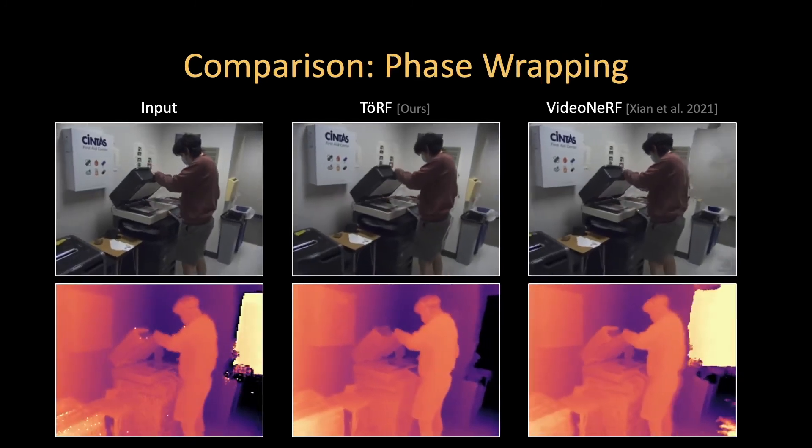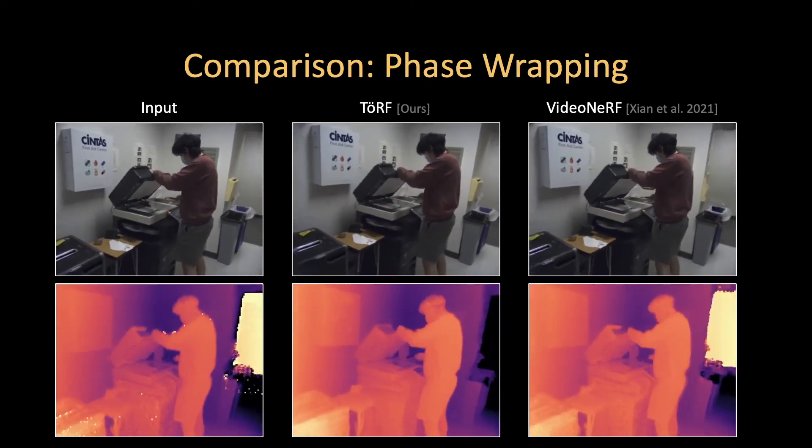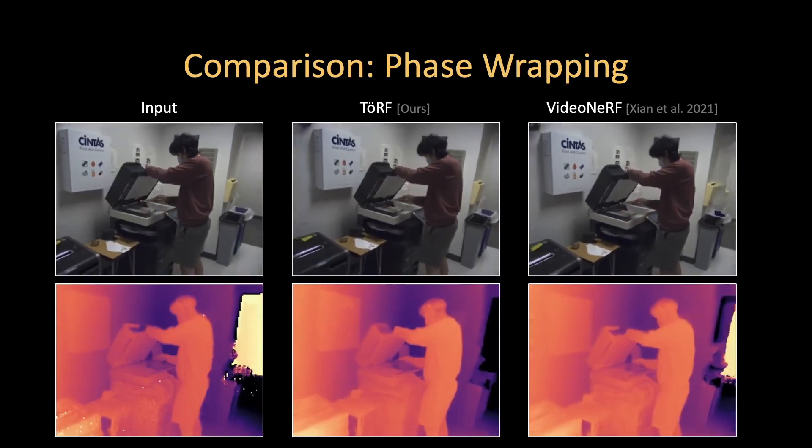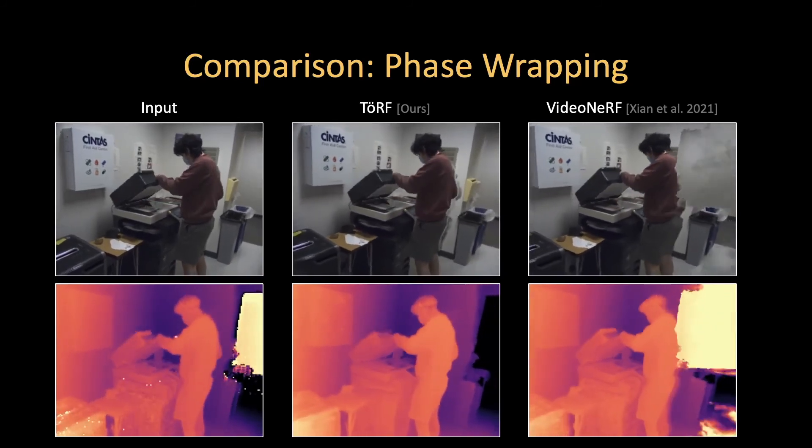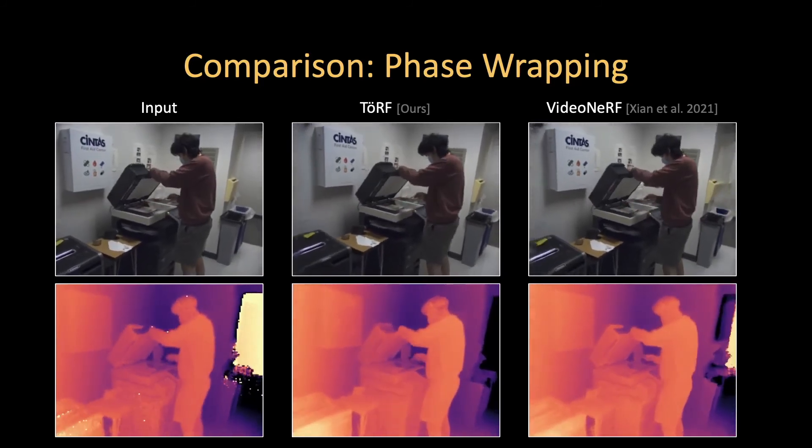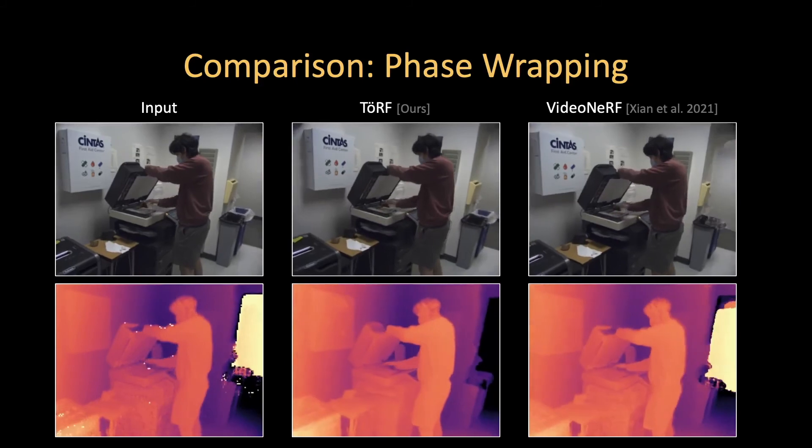Furthermore, our method successfully unwraps phase for faraway objects and scenes with large depth ranges, while baseline methods fail to do so. Observe the incorrect disparity for the far wall on the right side of this sequence.